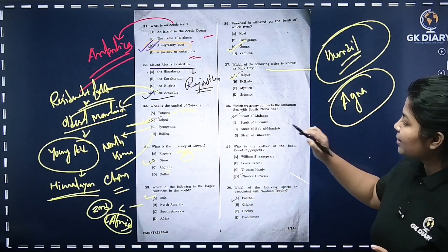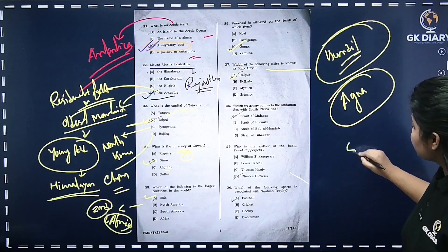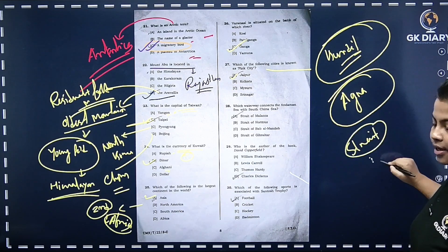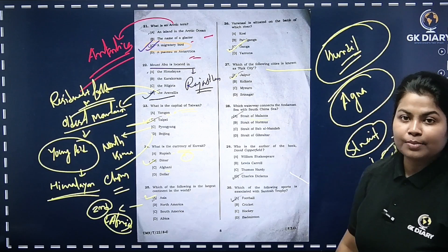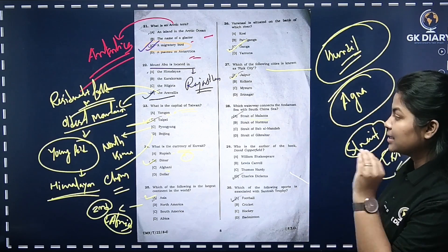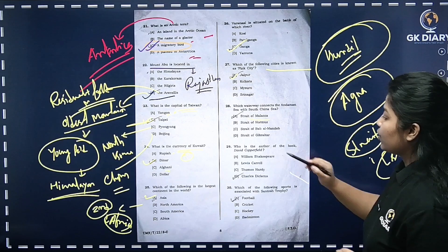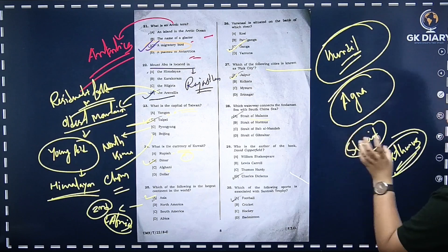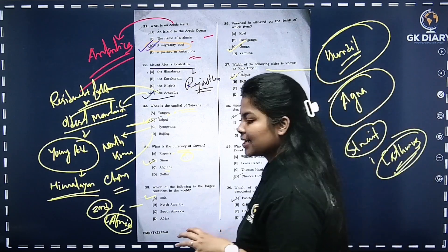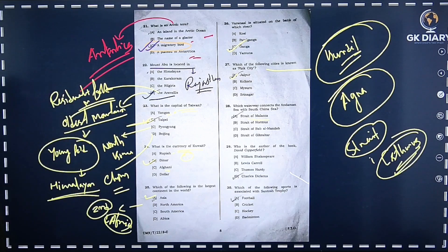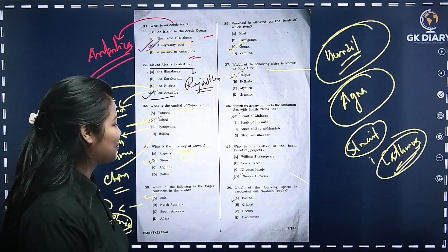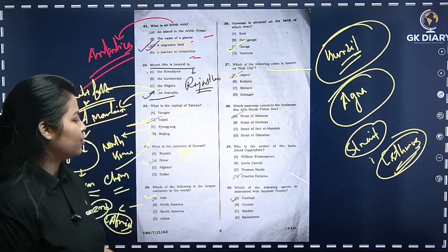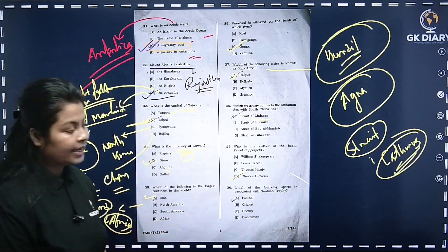The Strait of Malacca connects the Andaman Sea with the South China Sea. Next: who is the author of the book David Copperfield? The correct option is Charles Dickens.